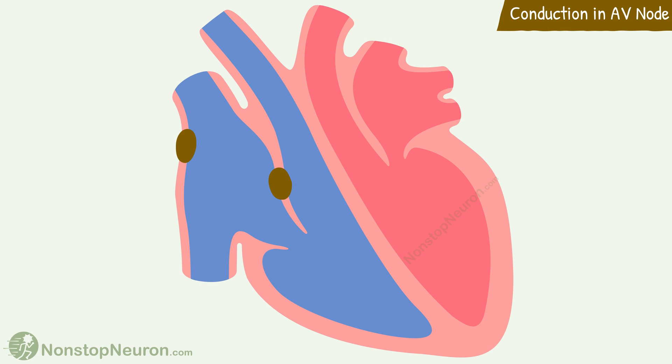First we will see some basics. We know that impulses are generated at the SA node. From there they travel to the AV node, and from the AV node, it's transmitted to the Purkinje fiber system.